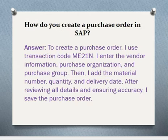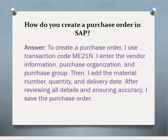How do you create a purchase order in SAP? To create a purchase order, I use transaction code ME21N. I enter the vendor information, purchase organization and purchase group. Then I add the material number, quantity and delivery date. After reviewing all details and ensuring accuracy, I save the purchase order.